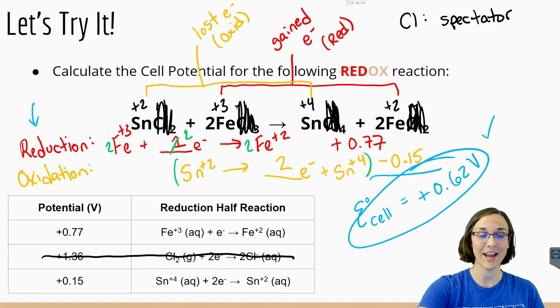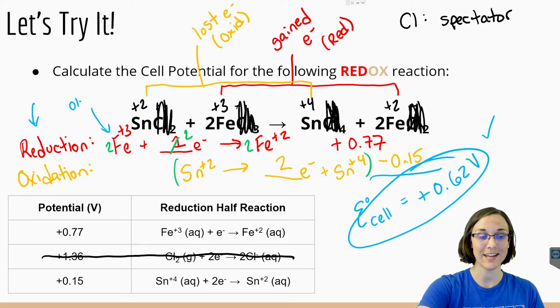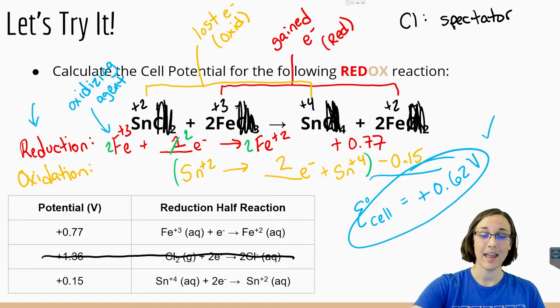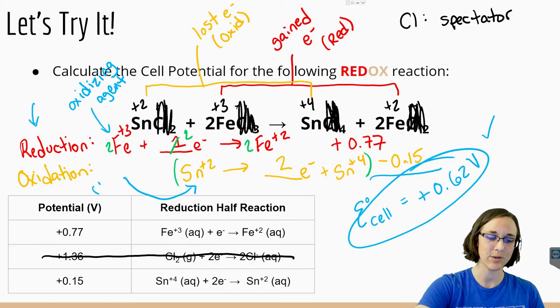The reduction half reaction — iron in this case — is going to be the oxidizing agent. And the tin, since it's the oxidation half reaction, is going to be the reducing agent.